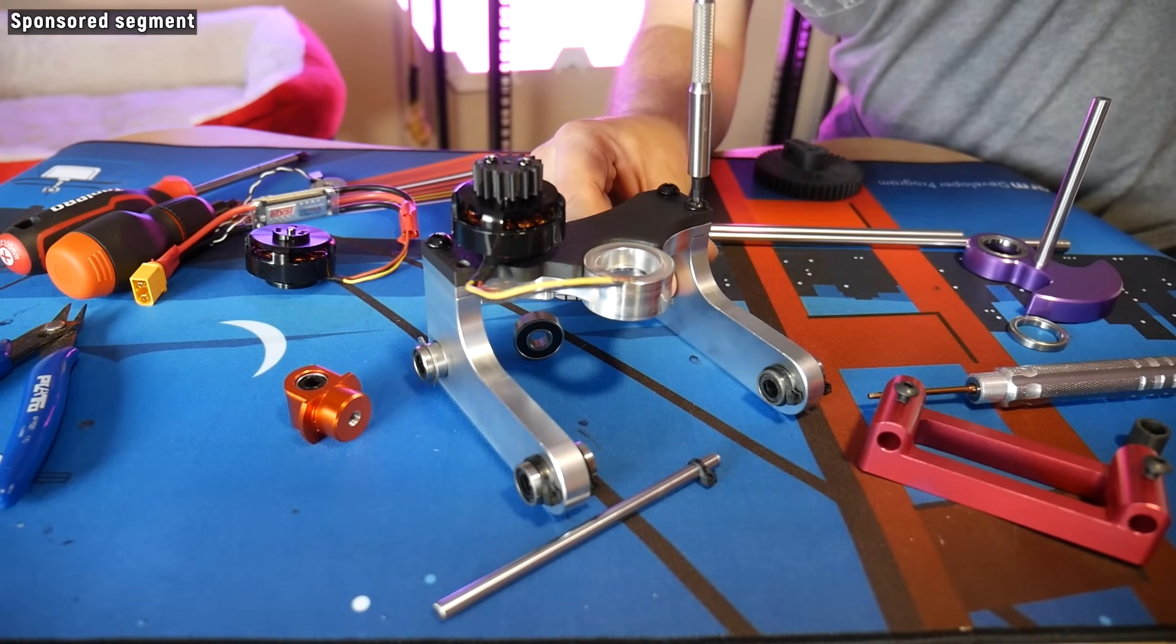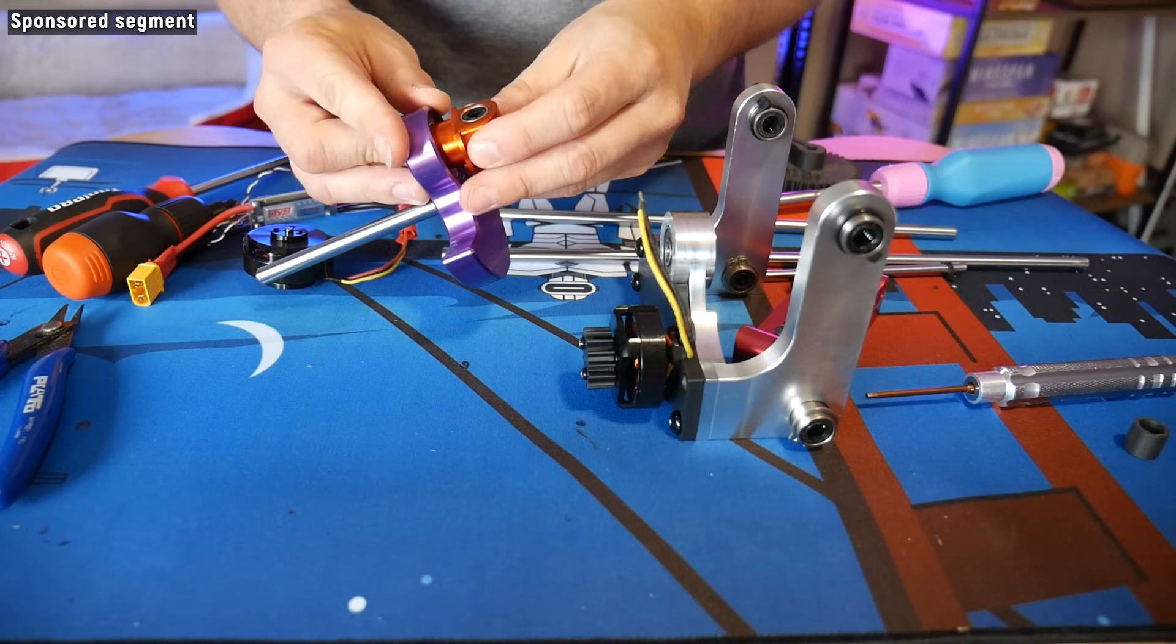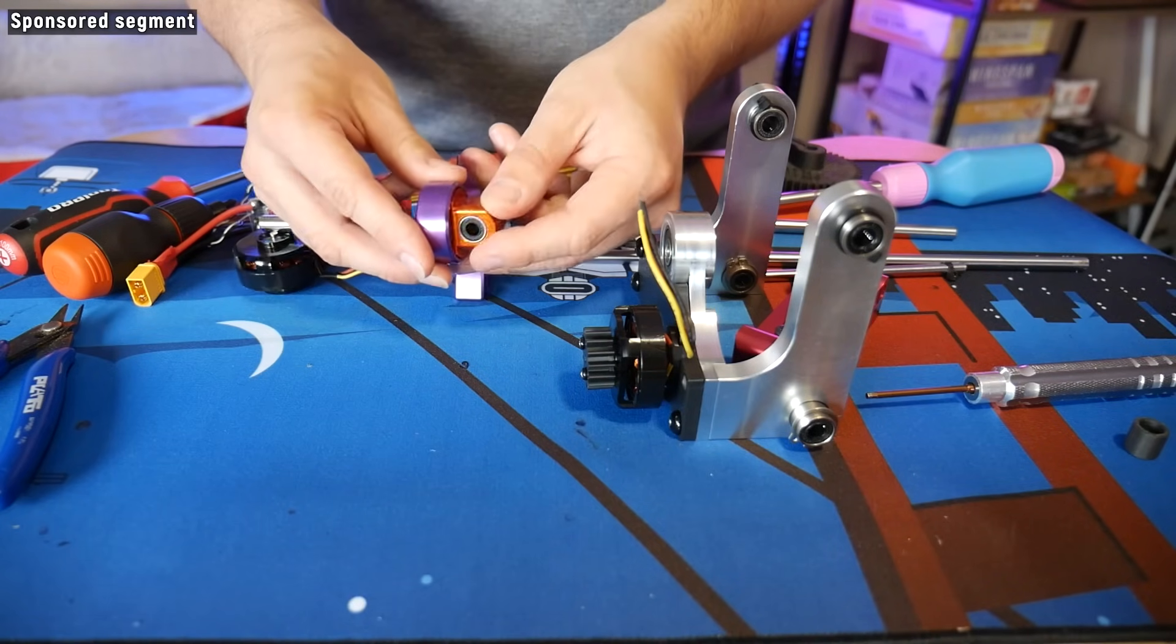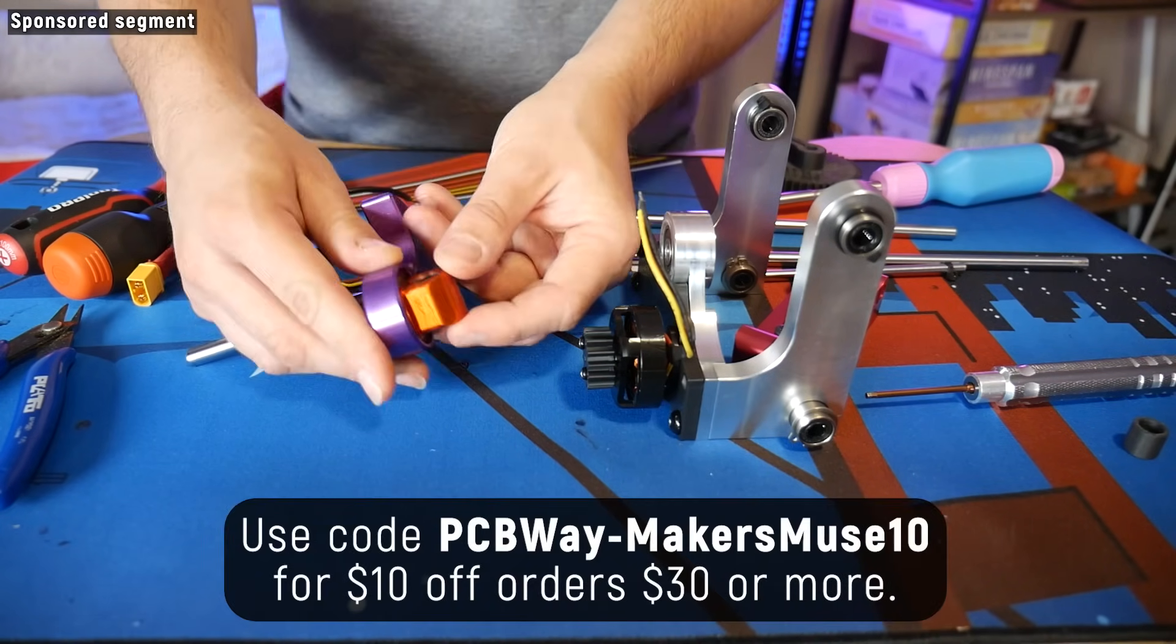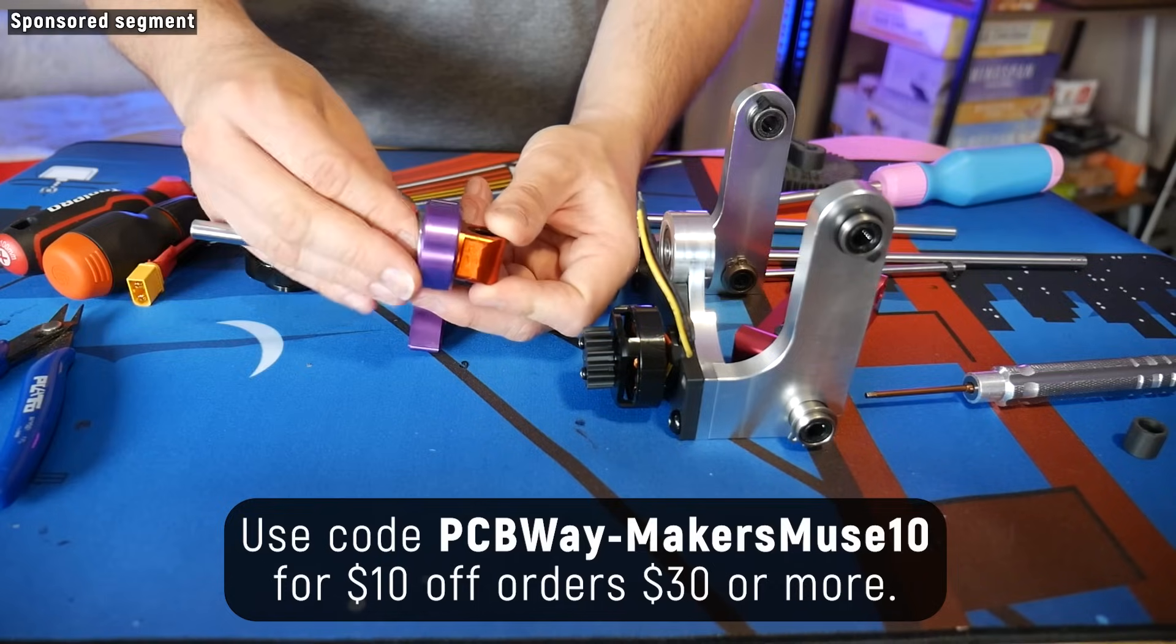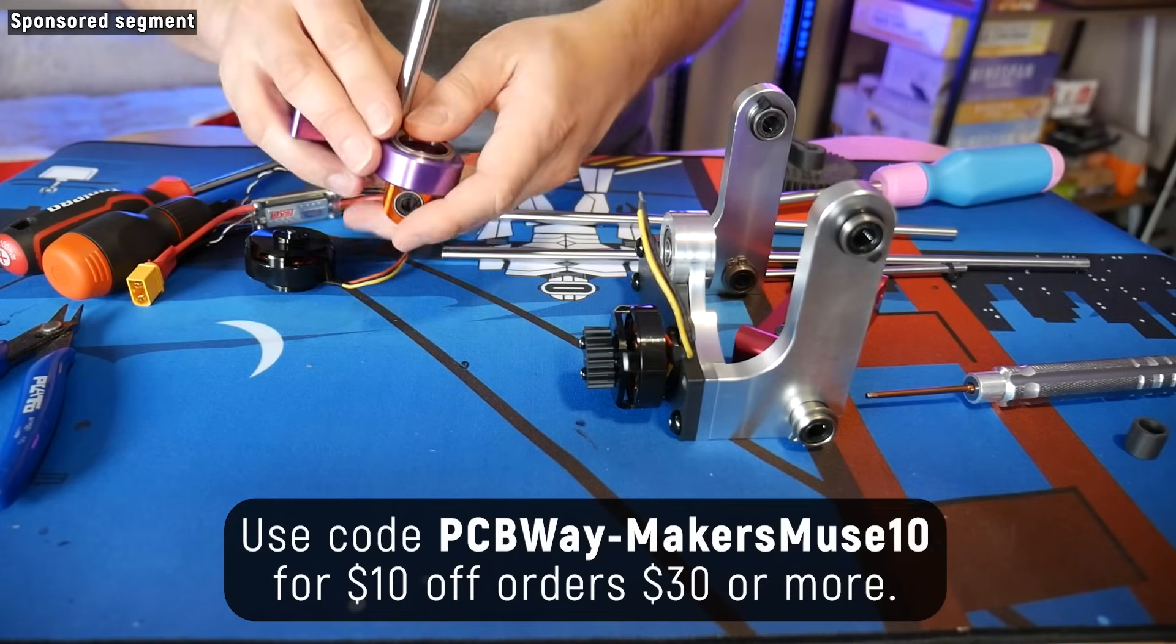So if you want to turbocharge your project with almost any material or process, why not give PCBWay a go? You can use the code PCBWayMakersMuse10 for $10 off any order over $30. More information in the video description below. Big thanks to PCBWay for sponsoring this video.